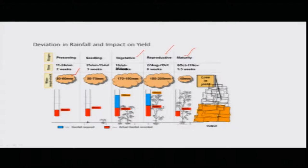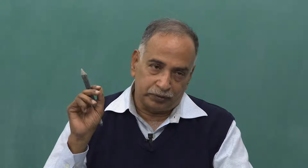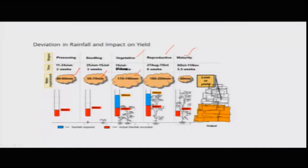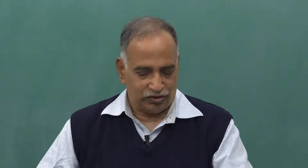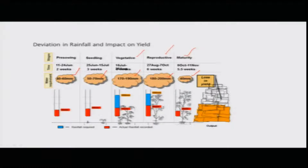The amount of water required by crops varies — from 40 to 60 millimeters in the pre-sowing stage, to 50 to 70 centimeters in the seedling stage. As the plant grows, water requirement approximately doubles from pre-seedling conditions. During the reproductive stage — flowering and fruit filling — water requirement is around 180 to 200 millimeters, while at maturity the required amount is much less. Any deficit at these five stages will impact crop yield.